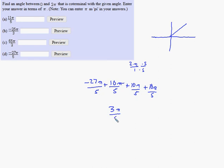3π/5 satisfies both conditions: the angle must be between 0 and 2 pi. Think of it as three-fifths pi. It's obviously positive so it's bigger than 0. To confirm it's less than 2 pi, note that three-fifths equals 6 tenths, which is 0.6. So this is 0.6 pi, and 0.6 is certainly less than 2. So 3π/5 is the correct answer for part D.